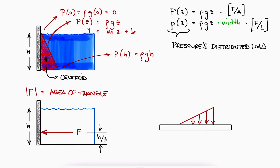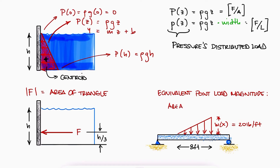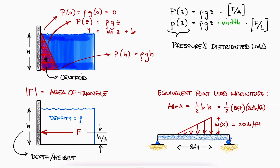As opposed to triangular loads on a beam, we don't need to be given the highest value for the load density. In the case of a load on a beam, we would be given a w(x) that reads something like 20 pounds per foot, referring to that highest value. The area of the triangle would be one half of the base times that 20 pounds per foot height. In the case of hydrostatic pressure problems, by knowing the depth or height and the type of liquid, we can find that highest value from the distributed load.